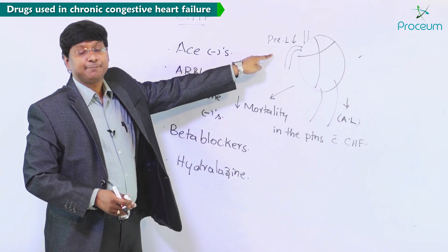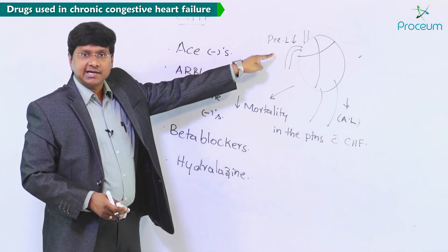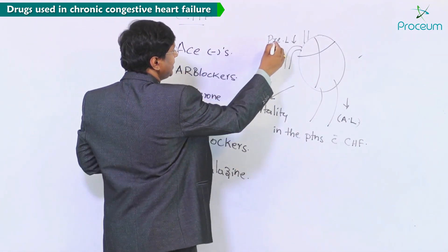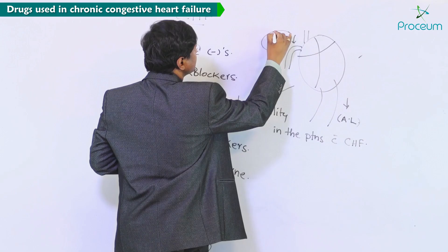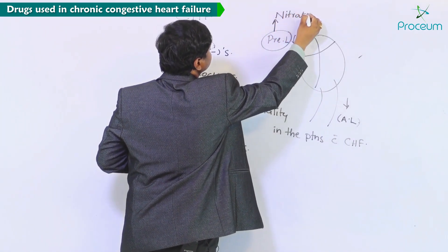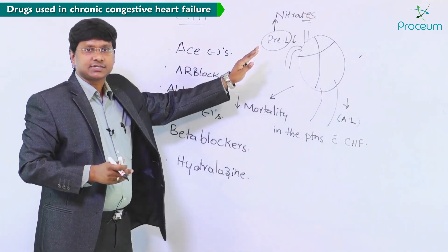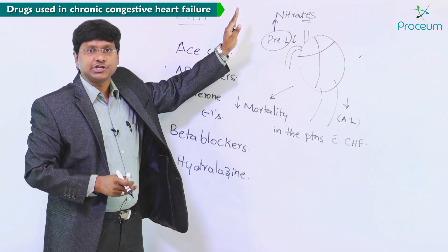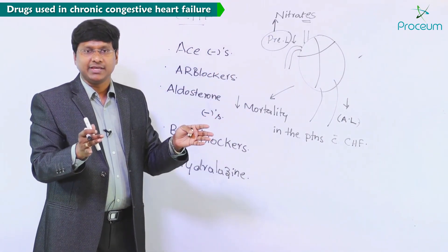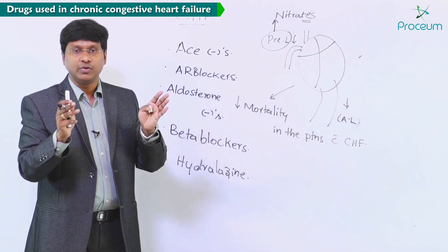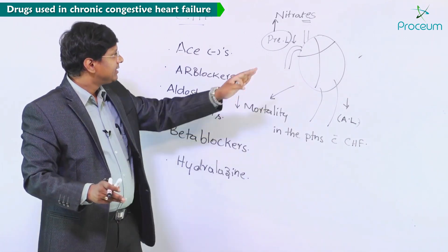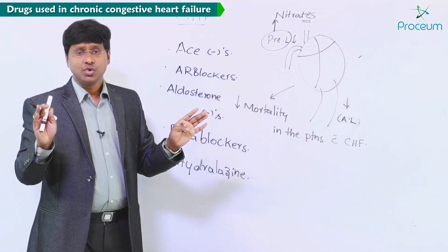Now, the drugs which will reduce the preload on the heart are venodilators, and these venodilators include the nitrates. Nitrates are the preferential drugs which dilate the veins. Once they dilate the veins, the venous blood undergoes stasis within the veins, and thereby there is preload reduction.